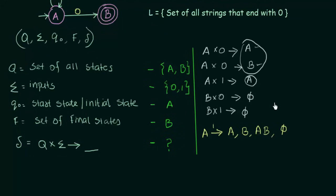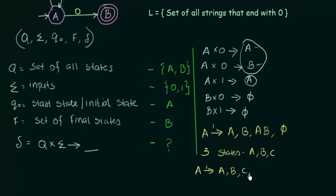Now let's take another example with three states: A, B, and C. Suppose state A gets a particular input — what are the possibilities? A can go to A itself, go to B, go to C, go to {A,B}, go to {A,C}, go to {B,C}, go to all of {A,B,C}, or go nowhere (phi).